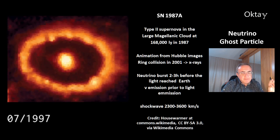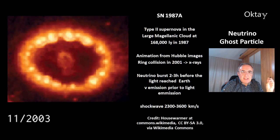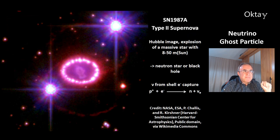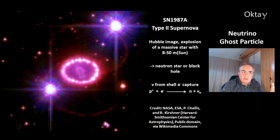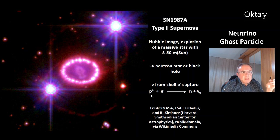The shock wave in this picture has a speed of 2,300 to 3,600 kilometers per second. This is another beautiful picture of the same supernova, 1987A, another image from Hubble. A supernova type 2 is an explosion of a massive star with a mass of 8 to 50 solar masses. Depending on the initial mass, the product is either a neutron star or a black hole. And this is what produces the neutrinos — that's the electron capture from the shell of the nuclei. A proton captures an electron, then you get a neutron, and the byproduct is the electron neutrino.